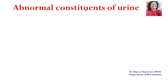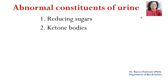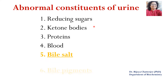The abnormal constituents of urine are reducing sugars, ketone bodies, proteins, blood, bile salts and bile pigments. Today we will be discussing bile salts and bile pigments — what are the tests and how are they done.